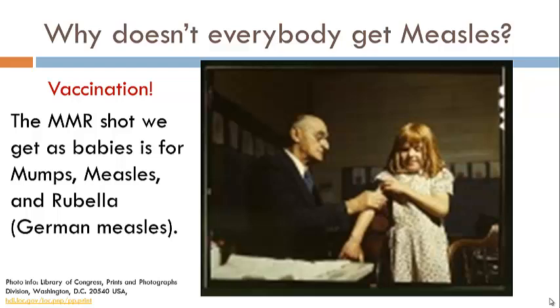Why doesn't everybody get measles? Because we're vaccinated. The MMR shot we get as babies is for mumps, measles, and rubella, also known as German measles.